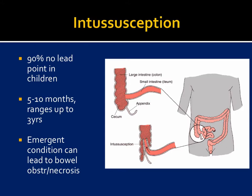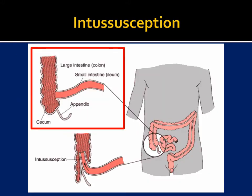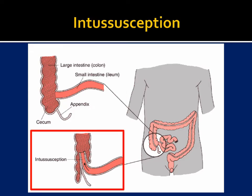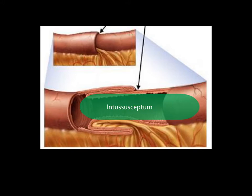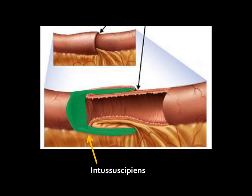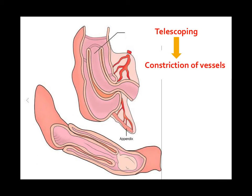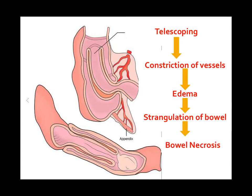Remember that intussusception is an emergent condition that can lead to bowel obstruction and necrosis, so it's something we have to come in and treat in the middle of the night. Lymphoid hyperplasia is the typical culprit — the terminal ileum is rich in lymphoid follicles, so the right lower quadrant is where we often see intussusception. The telescoped bowel, called the intussusceptum, goes into the intussuscipiens. Vessels get pinched off, leading to bowel edema, strangulation, necrosis, and if untreated, death.